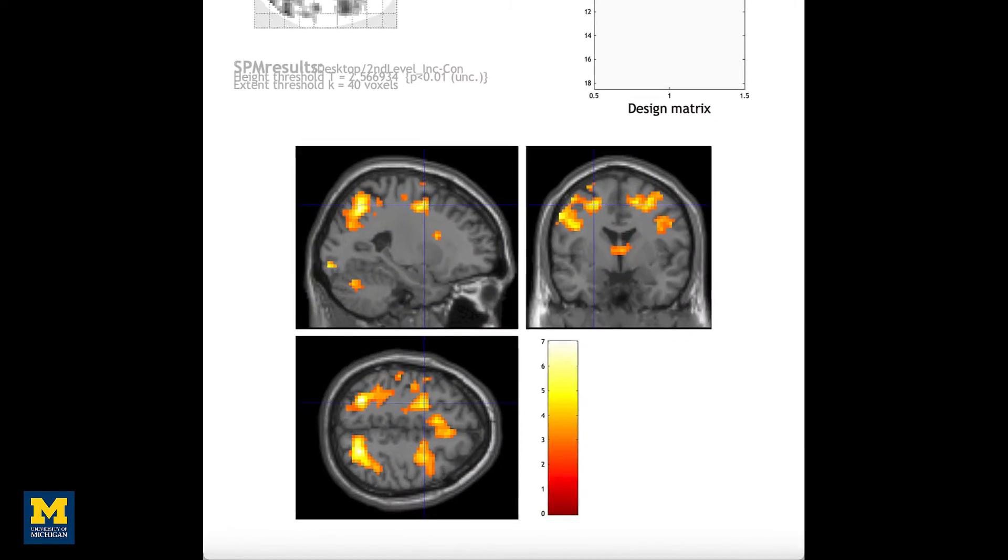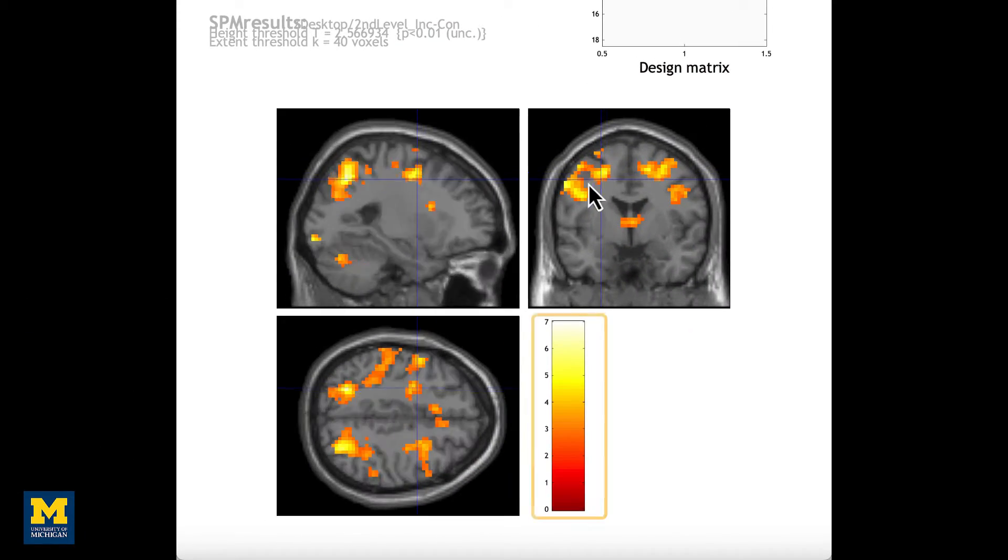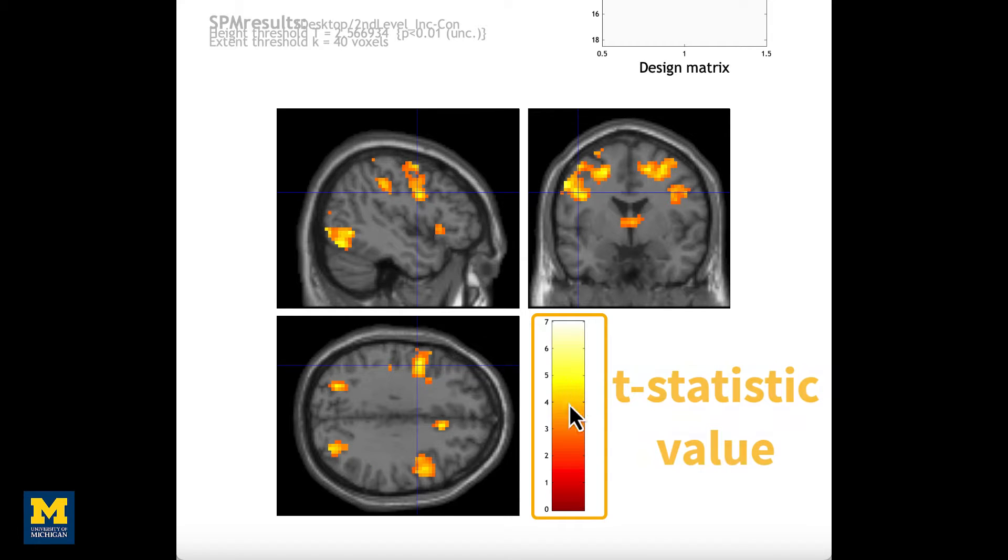When you've finished your fMRI analysis, you may wonder how you should report the results. Within the field of cognitive neuroscience, it's common to report the t-statistic for every effect and also to display the results as a t-statistic map overlaid on a template brain.